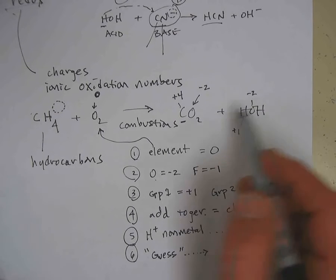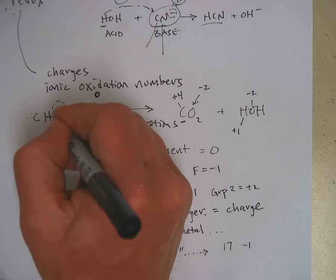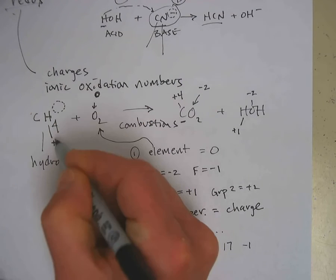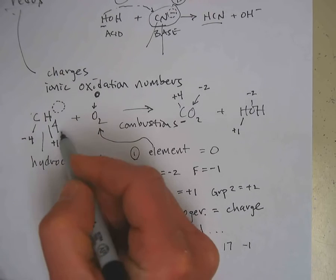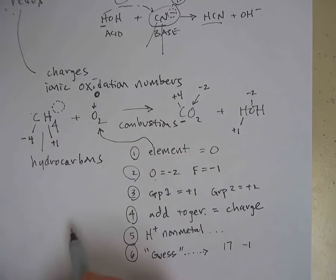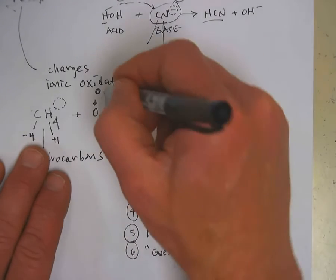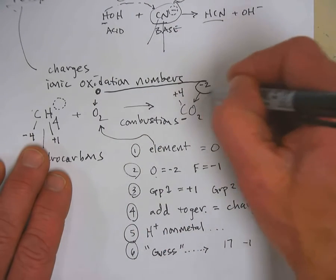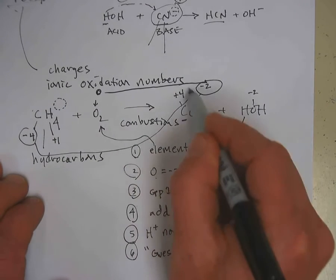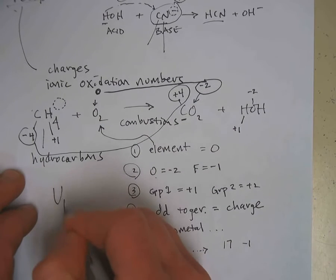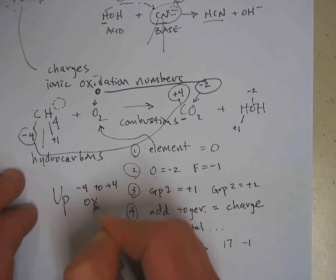Hydrogen over here is with a non-metal, so hydrogen must be plus one. And if there's four plus ones, that means carbon must be minus four to balance out those plus ones because it must add up to zero. So you can see from the left side to the right, oxygen went from zero to minus two, and carbon went from minus four to plus four. So the thing that went up in charge was minus four to plus four, and that is oxidized. Up and oxidized both start with a vowel.